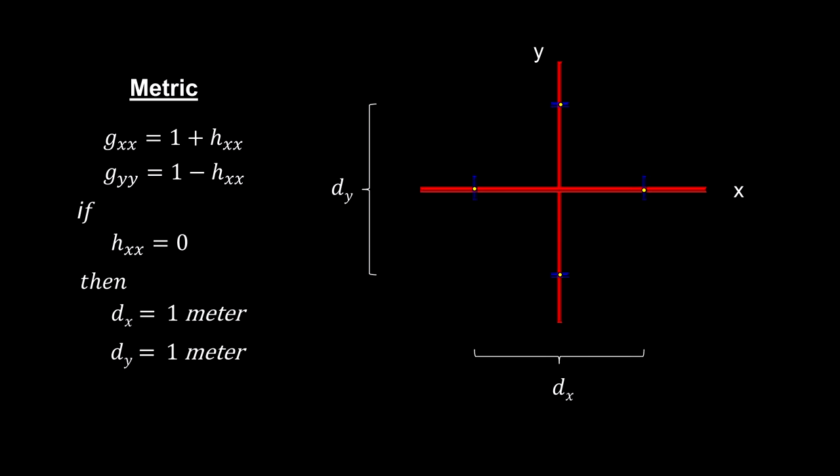When h returns to zero, the distance between these points returns to one meter. When h is less than zero, the distance between the two points on the x-axis will become shorter than one meter, and the distance between the two points on the y-axis will become longer than one meter.